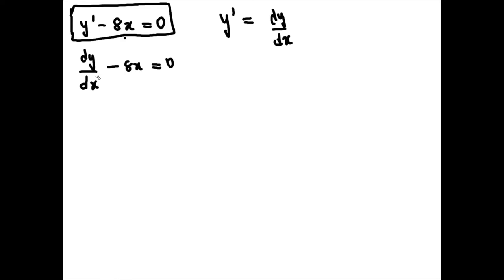So now we can move this 8x to the other side, so we have dy/dx equals 8x. And then we multiply both sides by dx, we have dy equals 8x dx.